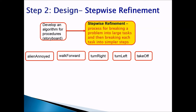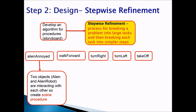Before we create procedures, keep certain things in mind. Where am I going to create these procedures? For alien annoyed, there are two objects interacting with each other — the alien robot is annoying the alien. So we're going to create a scene procedure for alien annoyed.